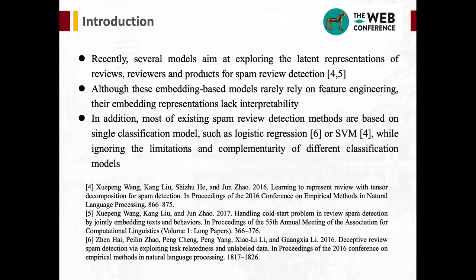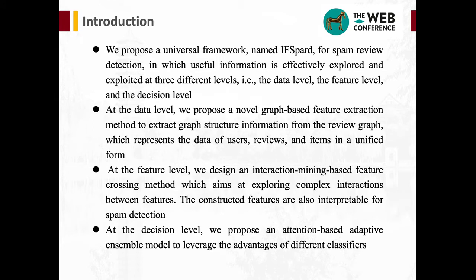In addition, most existing spam review detection methods are based on single classification models such as logistic regression or SVM, while ignoring the limitations and complementary nature of different classification models. To solve these problems, we propose a universal framework named IFSPART for spam review detection, in which useful information is effectively explored and exploited at three different levels: the data level, the feature level, and the decision level.